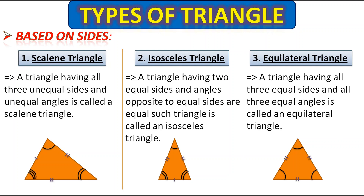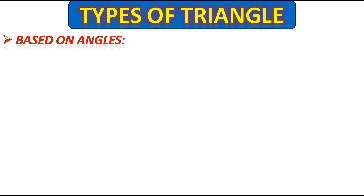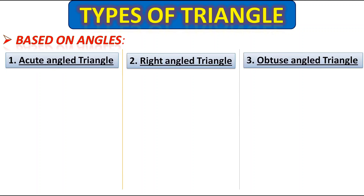Now let's see the types of triangles based on angles. Here we have three types: acute angle triangle, right angle triangle, and obtuse angle triangle. Let's see one by one. The first one is the acute angle triangle.